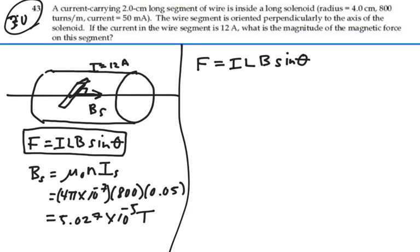In this case, that angle is going to be 90 degrees. So we have the current, 12 amps, times the segment, which is 2 centimeters, 0.02 meters,